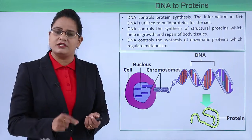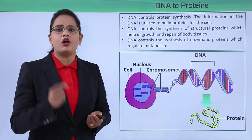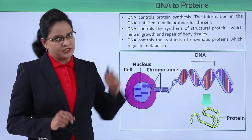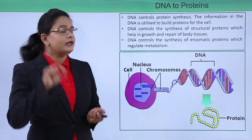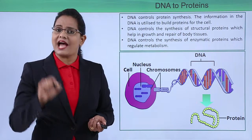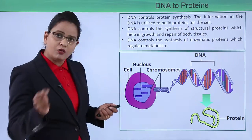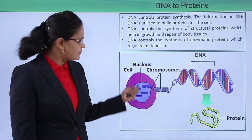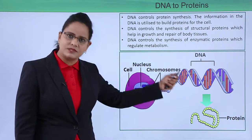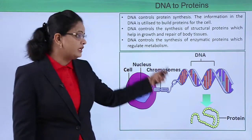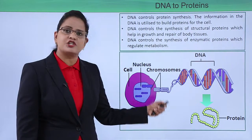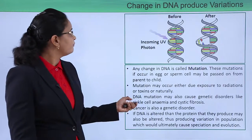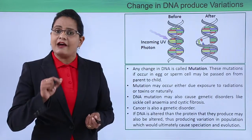DNA forms proteins — the DNA is the one which forms a functional protein, and proteins build all the cells of the body, or rather the entire body. So DNA controls protein synthesis — both structural proteins as well as enzymatic proteins. Let us see in the diagram: inside the cell the nucleus is present, in the nucleus chromosomes are present, and chromosomes are made up of DNA. This DNA has the message for the formation of a functional protein.